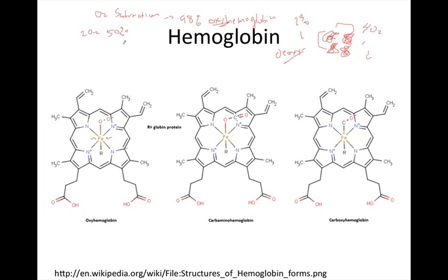Going back to the point about carbon dioxide and hemoglobin — oxygen binds to the iron in the heme group, while carbon dioxide binds elsewhere on the hemoglobin molecule, outside the heme group. These two gases don't compete for binding. That's important because if they did compete, transporting oxygen would be much more difficult.